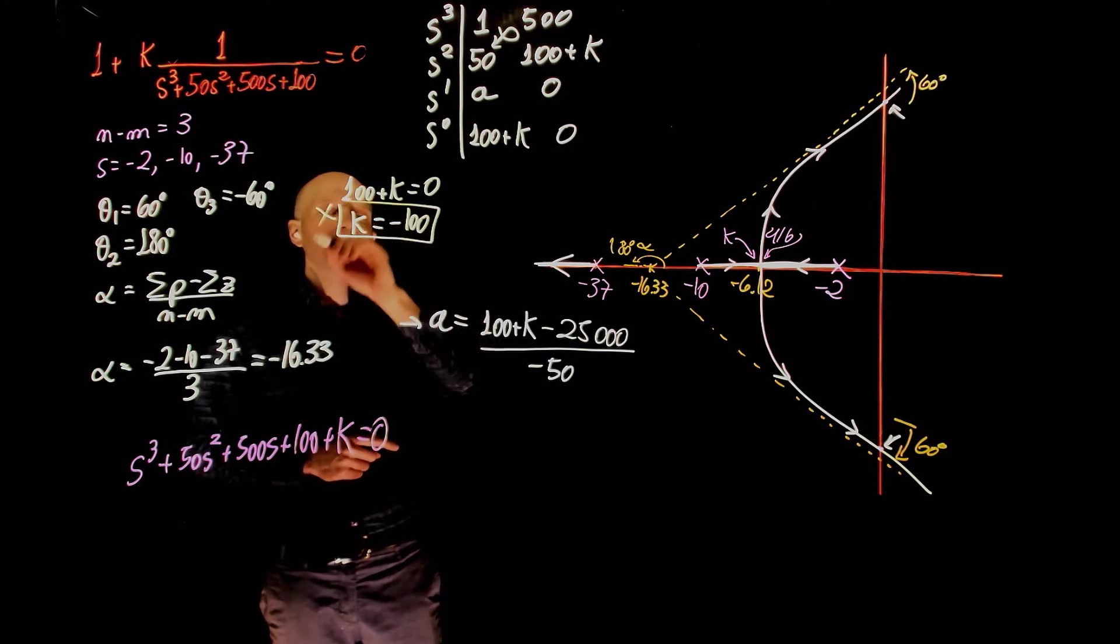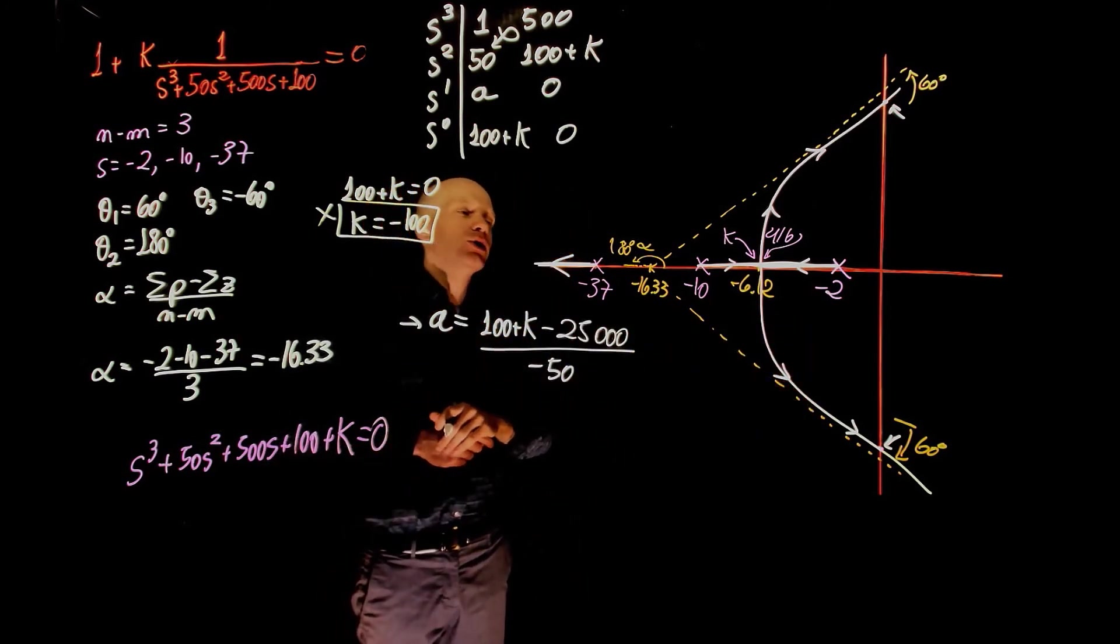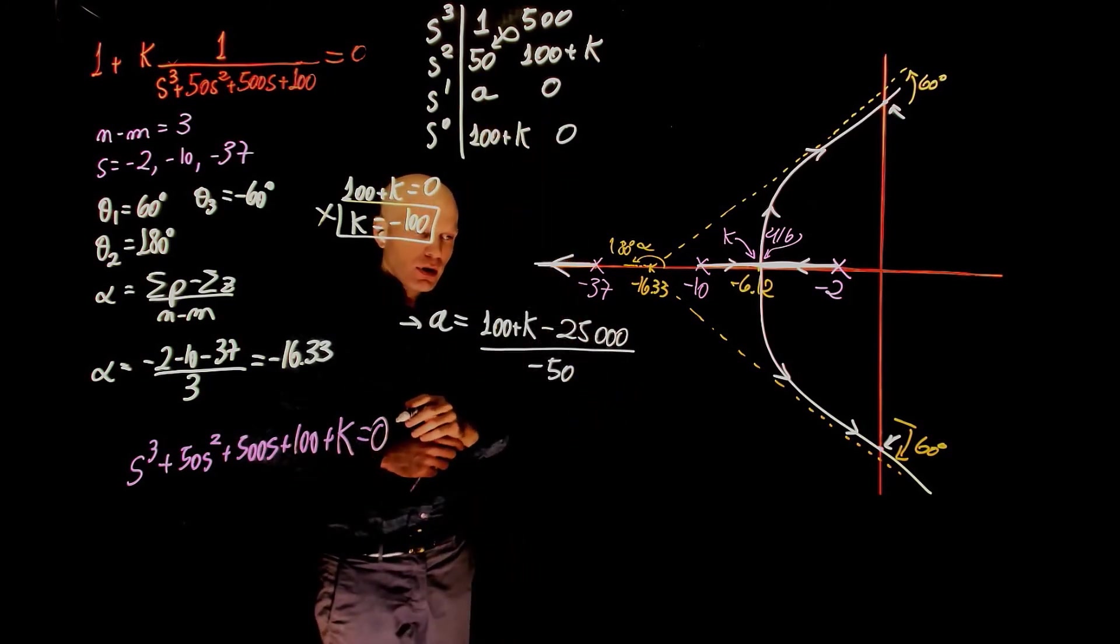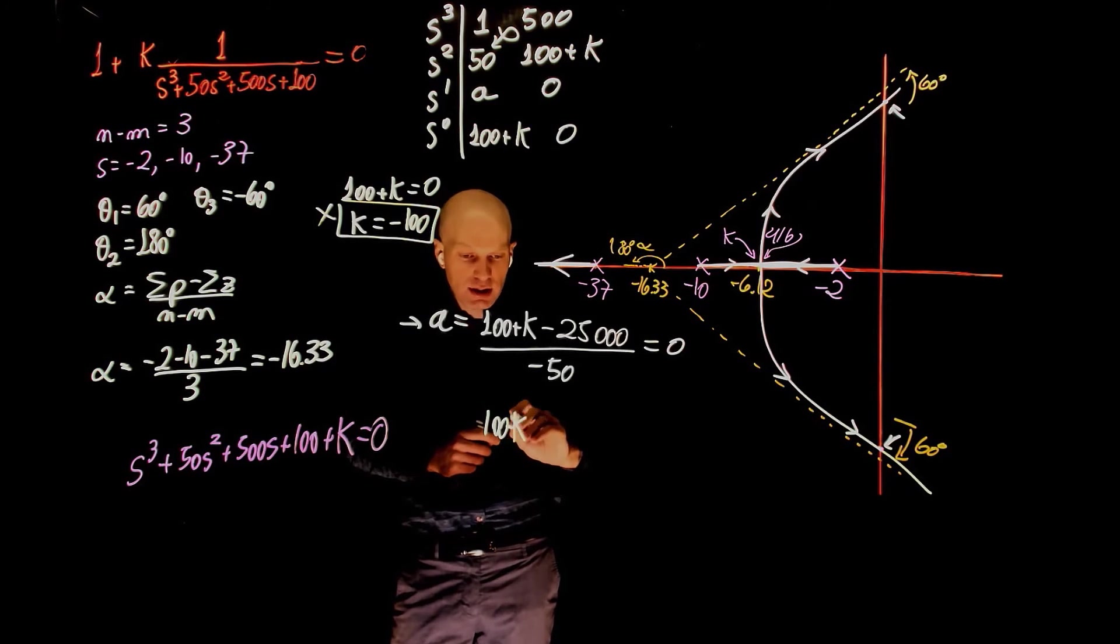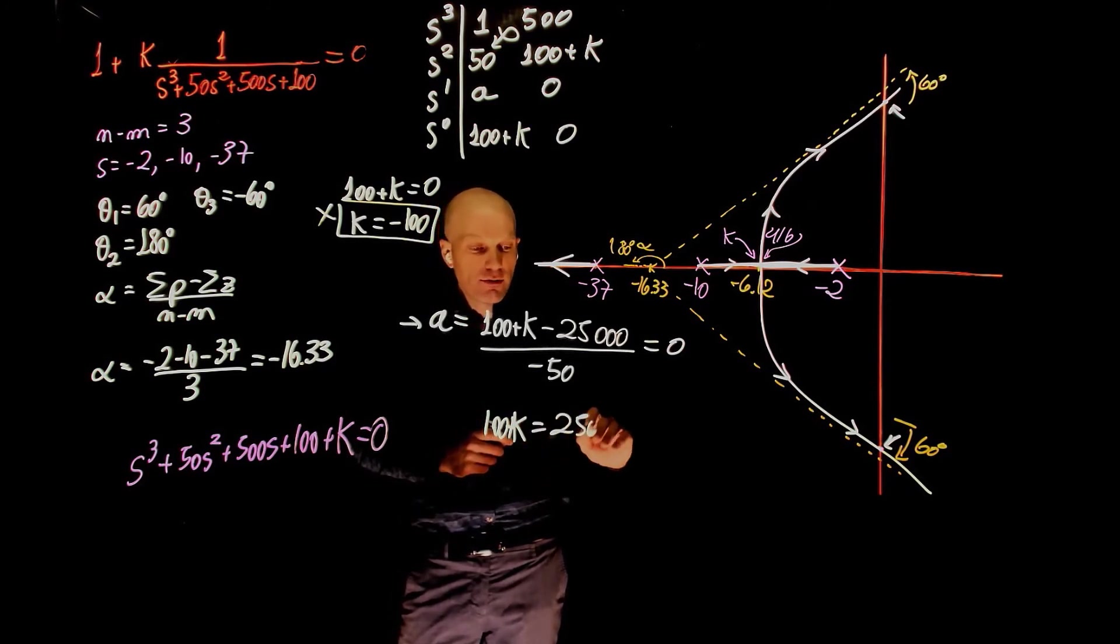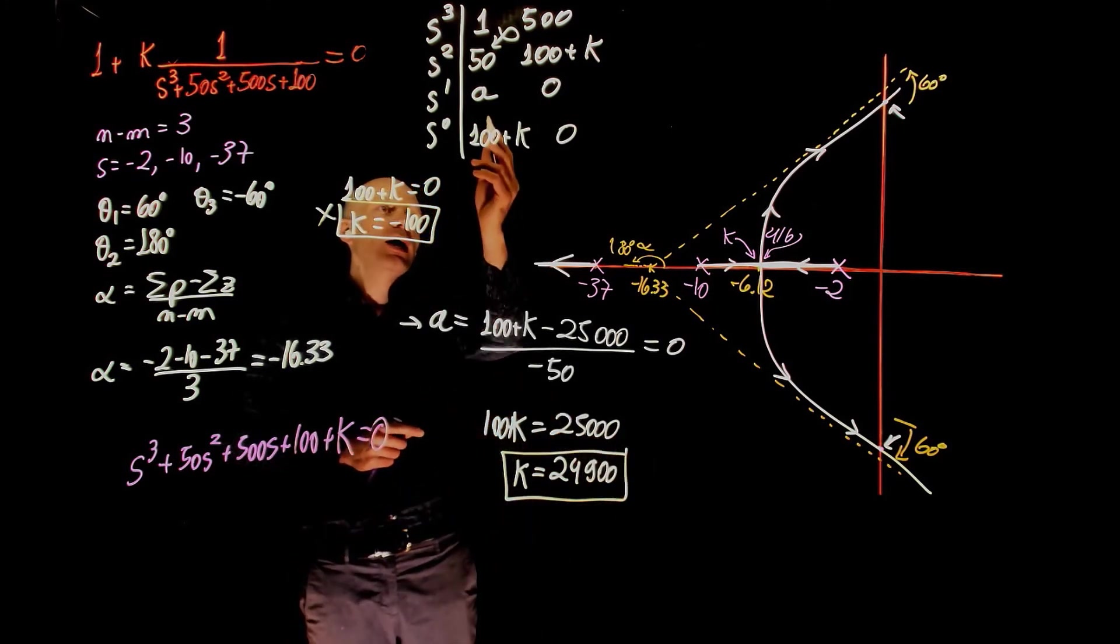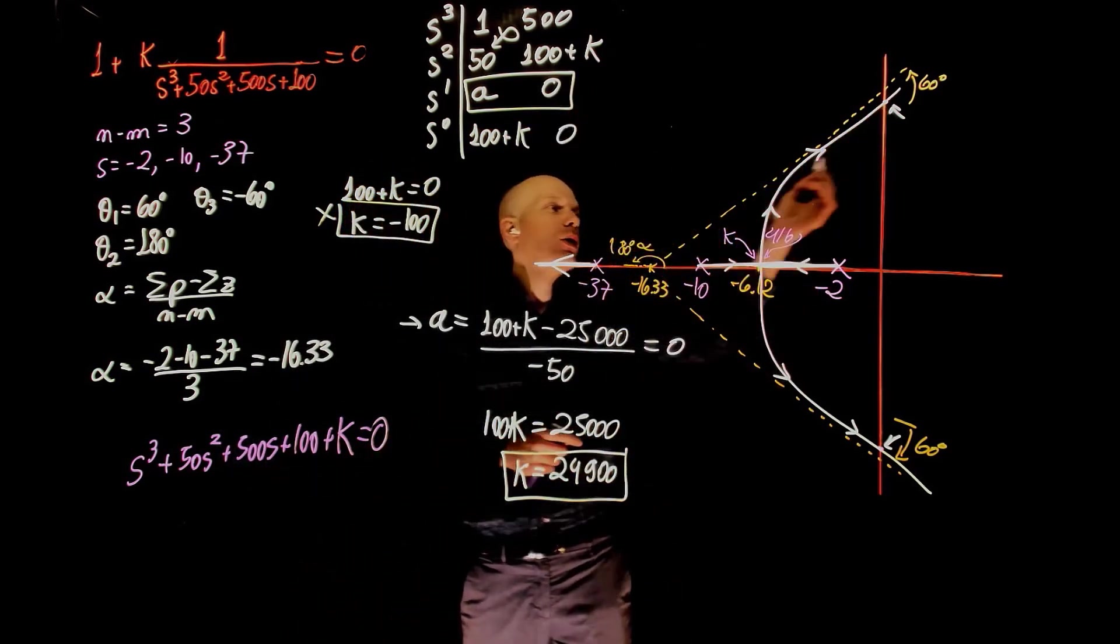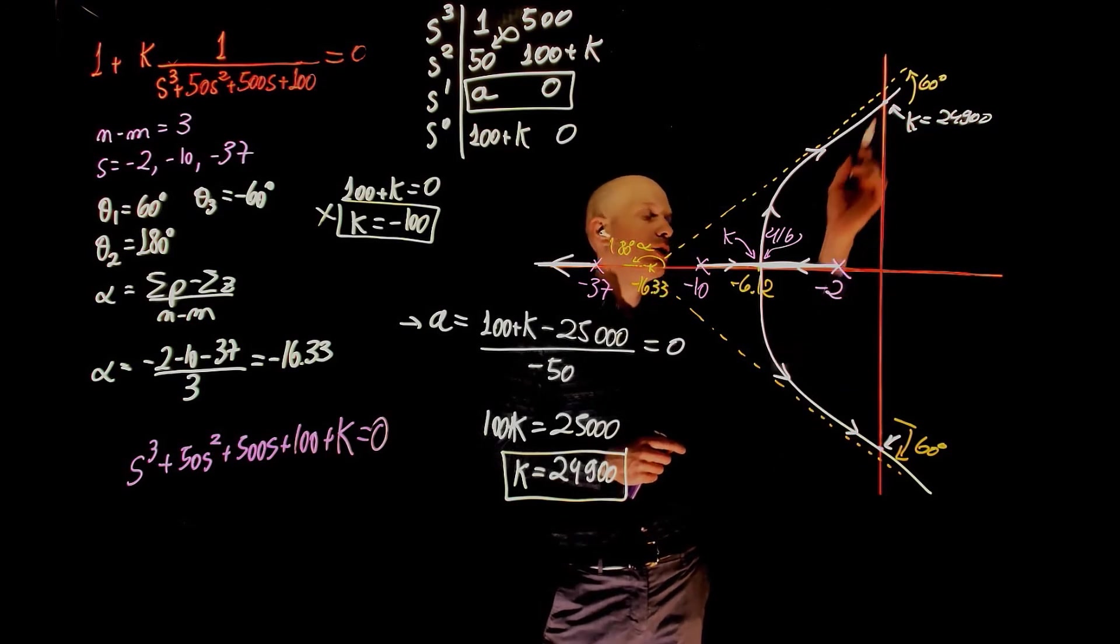This is not part of a root locus because the root locus goes from k equals to 0 to k tending to infinity. So this value of negative k is not of interest. Now let's set a to 0. If a to 0, we have a row of zeros here. If a equals to 0, we can now solve for k. We have 100 plus k equals to 25,000. k equals to 24,900. If k is 24,900, a is 0. We have a row of zeros here, which means that we are placed on the imaginary axis here. k equals to 24,900. And we are here and here.